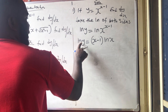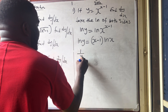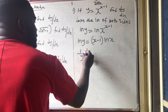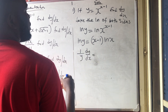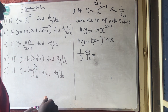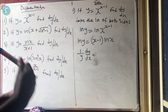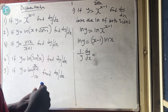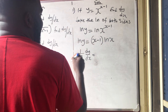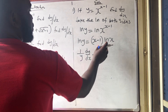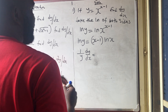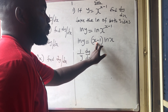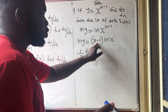Now we differentiate. If you differentiate ln y, you get 1/y, and since we're differentiating y, we must put dy/dx — this is called implicit differentiation. To differentiate the right side, this is a product rule because we have two terms.